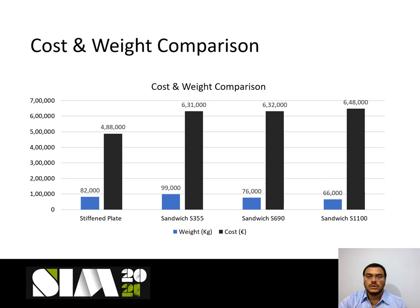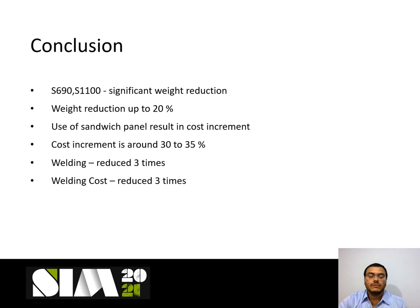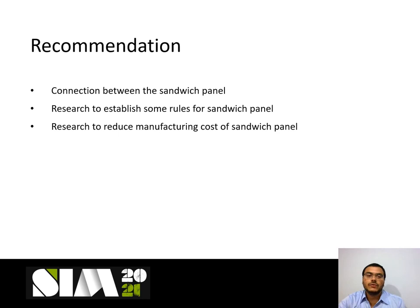In conclusion, sandwich panels with S690 and S1100 steel result in a significant amount of weight reduction — up to 20 percent can be achieved. However, use of sandwich panels also results in a cost increment of about 30 to 35 percent. On the other hand, the amount of welding and the cost of welding is reduced to one-third of that of the original design.